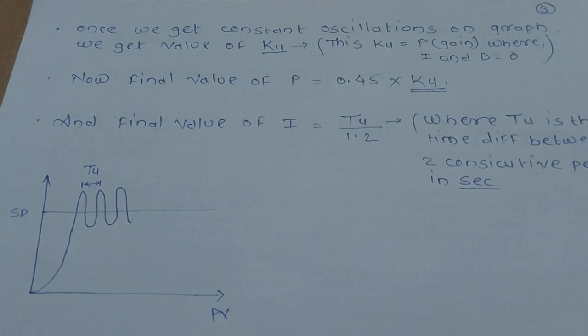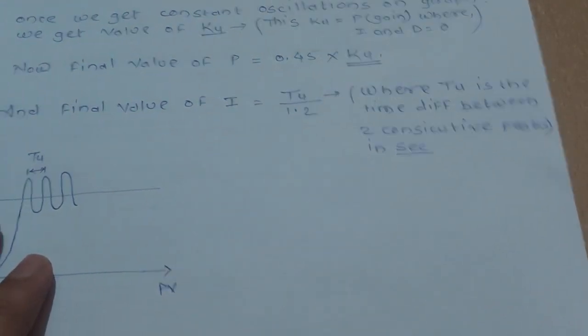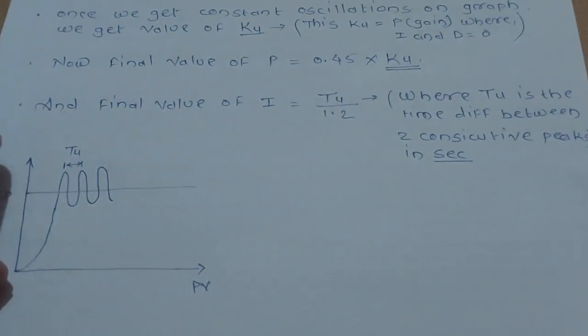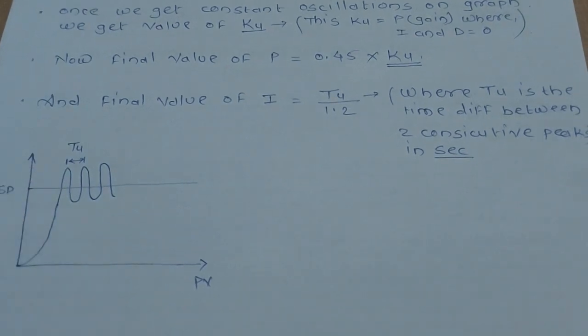Tu is the time difference between two consecutive peaks in seconds. So the time between these two peaks will be Tu, and it is in seconds.